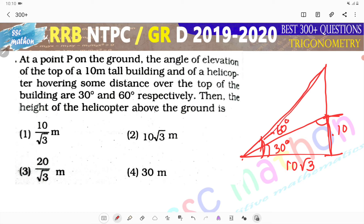Now look at this big triangle. This is 60, then it is 30. The 30 opposite is 10 root 3. It means 10 root 3 into root 3, which means 10 times 3 is 30.